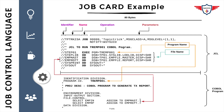Looking at the job card of this JCL, in the first line you have an identifier in the first two columns, then the job name. The job name should be a valid name — it should not start with a number; it should always start with an alphabet. You also have the JOB keyword, which identifies this as a job statement, followed by accounting information and a programmer name.